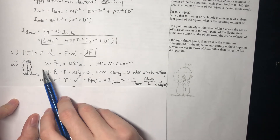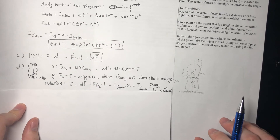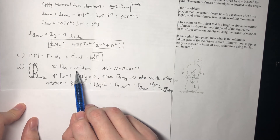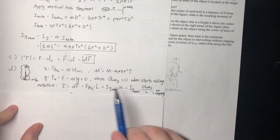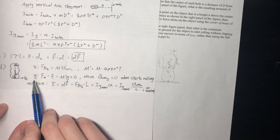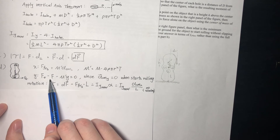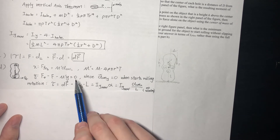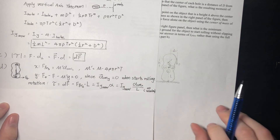We break down the diagram by summing forces. In the x-direction, the only horizontal force is friction, which equals the mass of the object times the acceleration of the center of mass. The mass of the object is M minus 4 times the density times the volume of each hole. In the y-direction we have three forces: normal force upward, minus the applied force F, minus Mg. This sum equals zero because the acceleration in the y-direction is zero when rolling first begins.